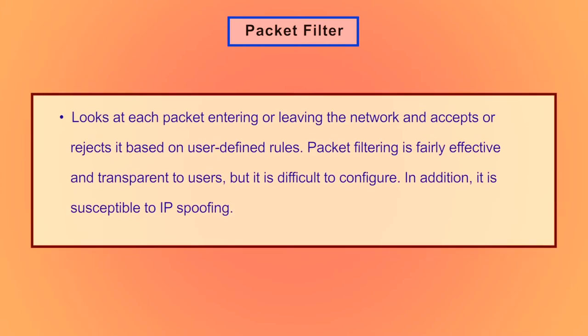Packet filter firewalls: data moves in a network in the form of data packets. The packet filter firewall looks at each packet entering or leaving the network and accepts or rejects it based on user-defined rules. Packet filtering is fairly effective and transparent to users, but it is difficult to configure and is susceptible to IP spoofing — the creation of internet protocol packets with a false source IP address for the purpose of impersonating another computer system.